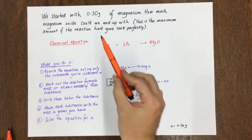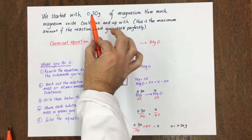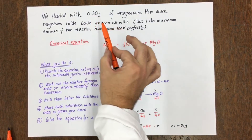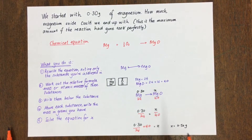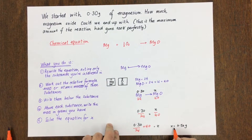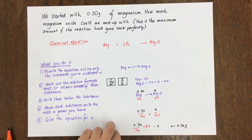What that means is, if we had 0.30 grams of magnesium — which we did — and the reaction goes perfectly, we could get a maximum amount of 0.50 grams of magnesium oxide.